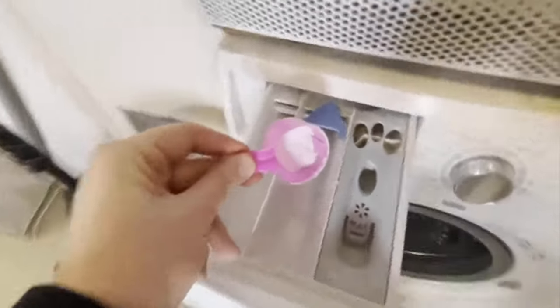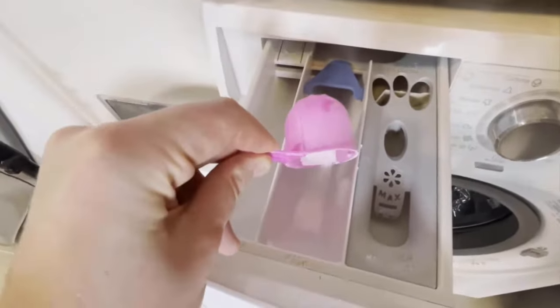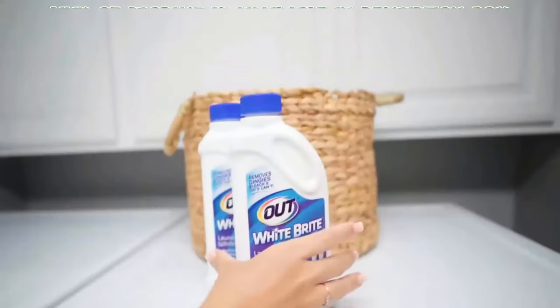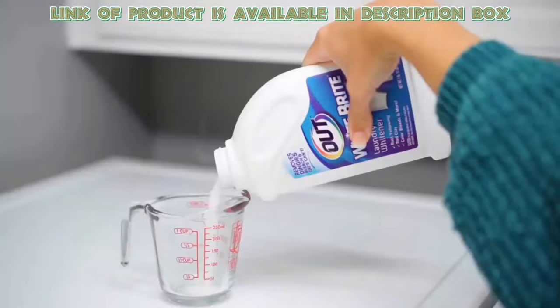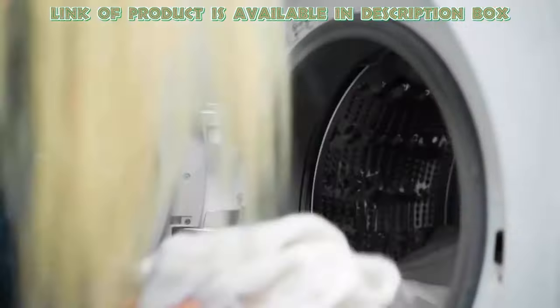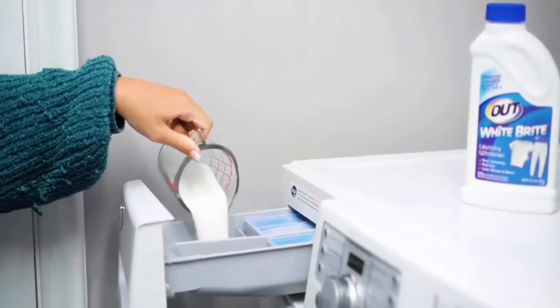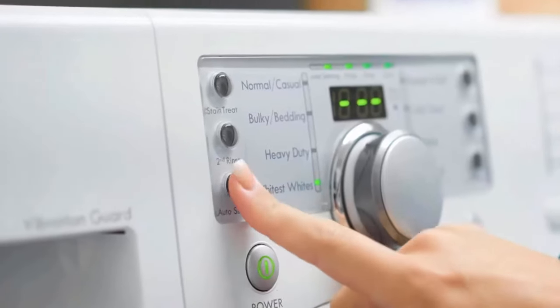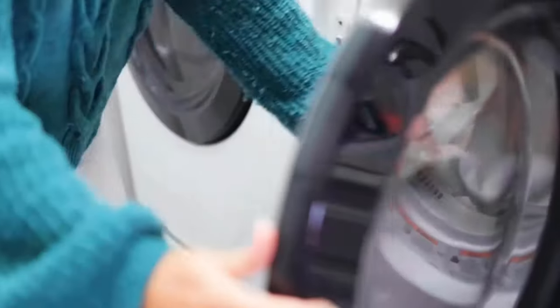Laundry whiteners are uniquely formulated to whiten and brighten white clothes effectively. Out White Bright Laundry Whitener can remove yellowing and rust stains caused by iron and other water impurities. You will get white and bright clothes easily by using it.